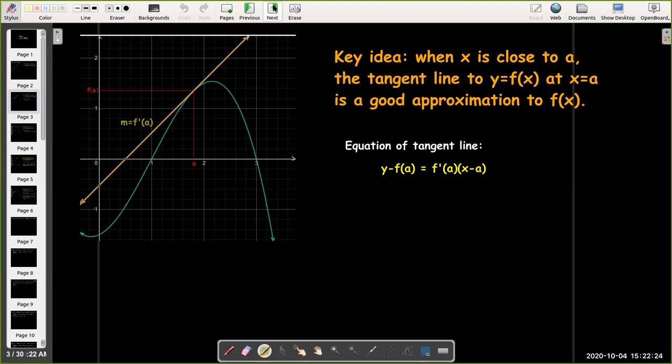So we could work out the equation of the tangent line. We know that the slope is f prime of a and we can use the point slope form and solve for y. So y would equal f of a plus f prime at a times x minus a.